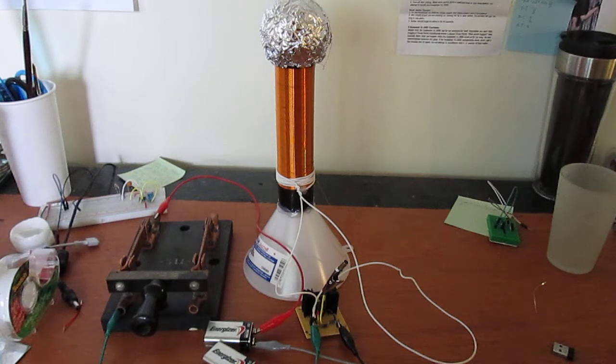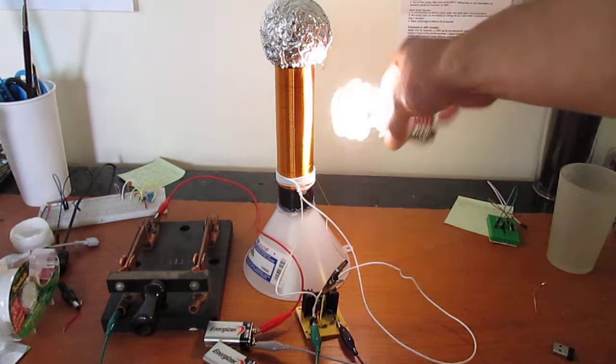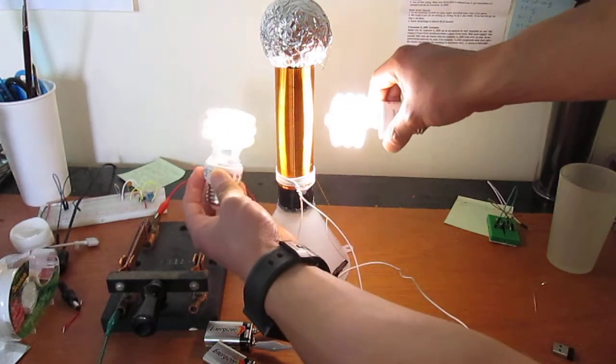Basically it's an air core transformer which steps up the primary voltage and emits a changing electric field which in turn lights a fluorescent light bulb like so. And you could even light up two light bulbs if you wished.